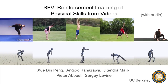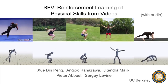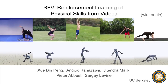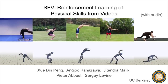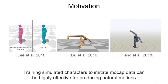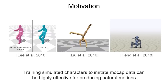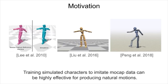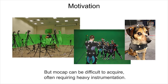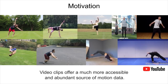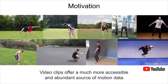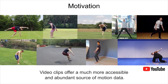We present a method that enables physically simulated characters to learn highly dynamic skills directly from video clips. Training simulated characters to imitate mocap data can be highly effective for producing natural motions, but mocap data can be difficult to acquire, often requiring heavy instrumentation. Video clips offer a much more accessible and abundant source of motion data.